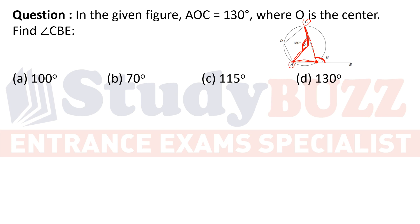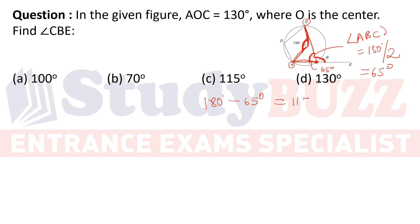The angle subtended at the circumference is half the angle subtended at the center by the same arc. So angle ABC = 130/2 = 65 degrees. Since angles ABC and CBE are a linear pair, their sum is 180 degrees. So angle CBE = 180 − 65 = 115 degrees. One property known and the whole question is solved.